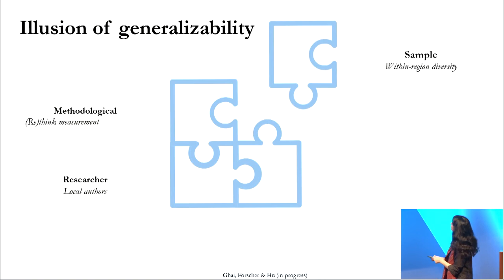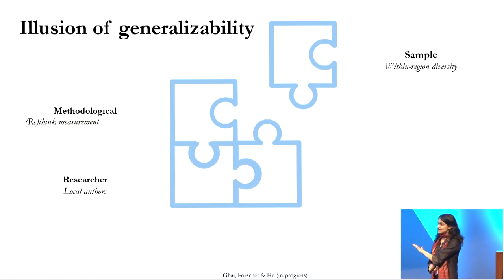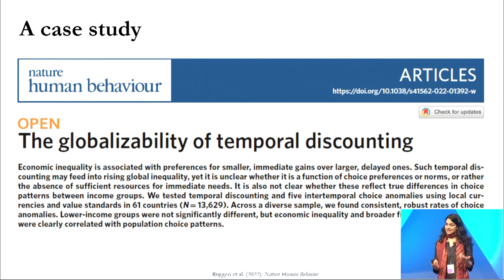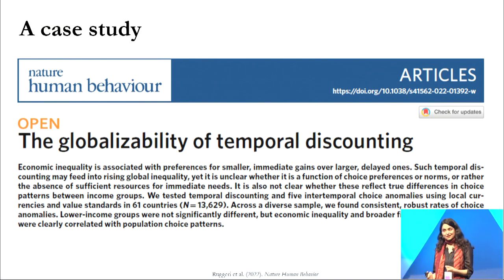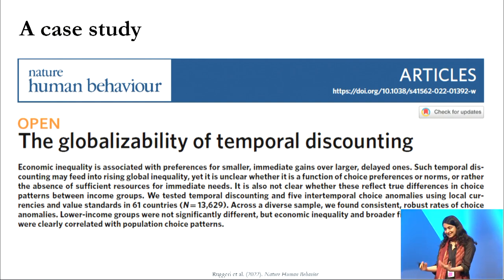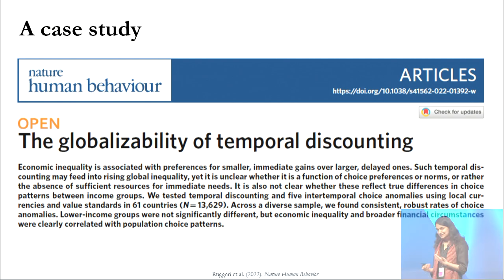In the next few slides, I'm going to be putting together and unpacking three pieces of the puzzle — sample, methodological, and researcher — using a case study. This is a big team science study published about a year ago, which claims the globalizability of temporal discounting, which is a classic decision-making bias where we prefer present over delayed gains. We reanalyzed parts of their data to pay attention to different aspects of sample and methodology.